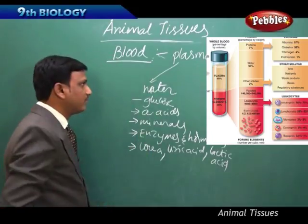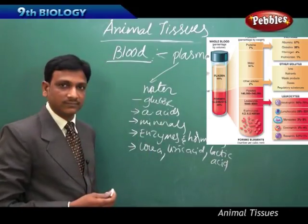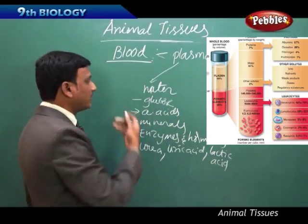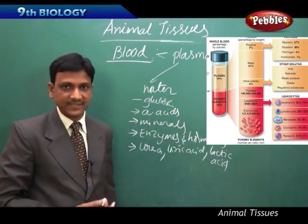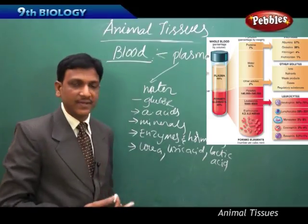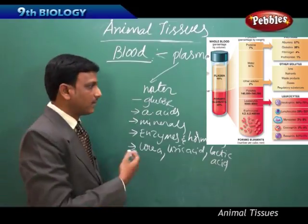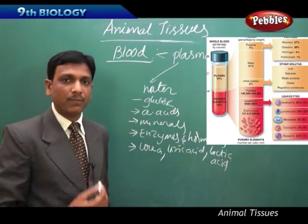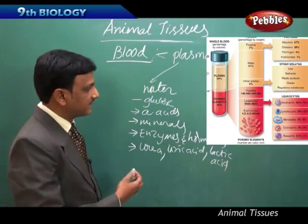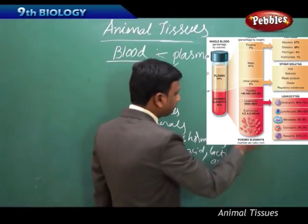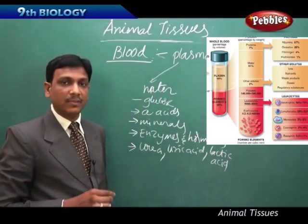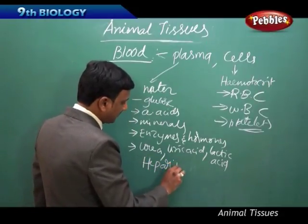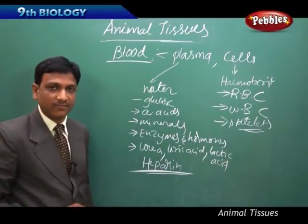The different types of cells in blood each perform a specific function. Red blood cells perform the function of carrying oxygen to different parts. White blood cells perform a defensive function — they help the body fight against disease-causing organisms. Platelets help in the process of blood clotting. In the plasma there is also a special substance called heparin, which helps in the process of blood clotting.